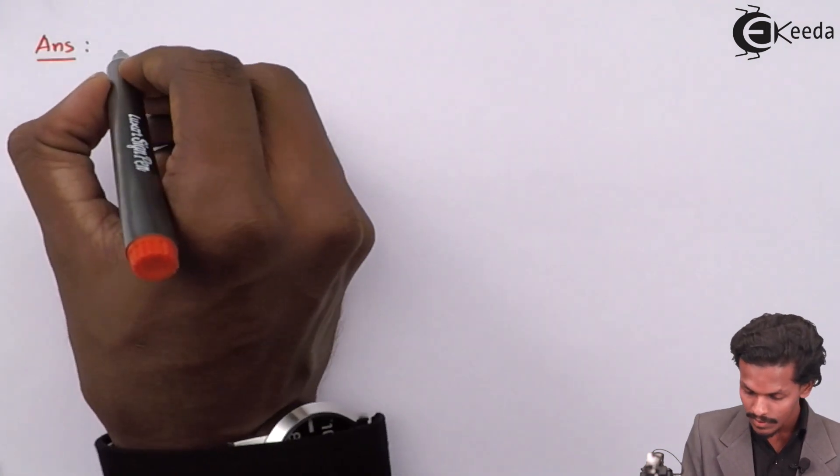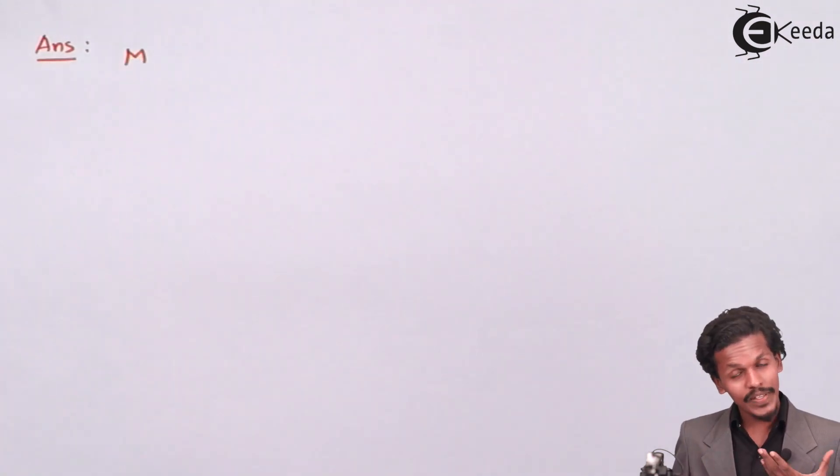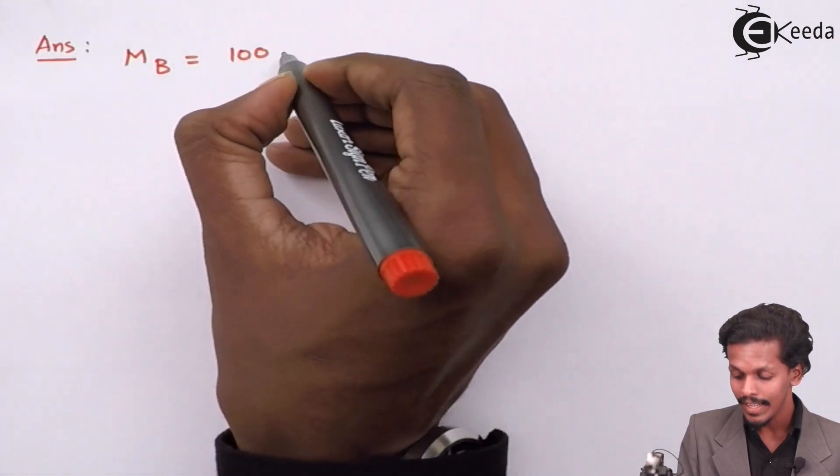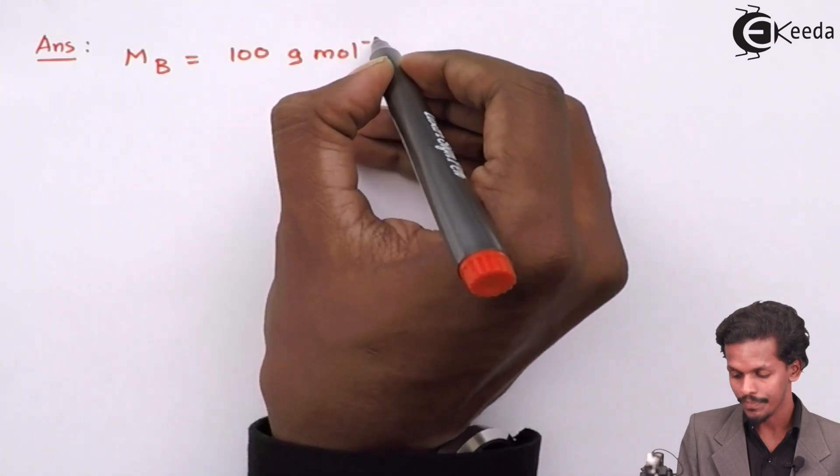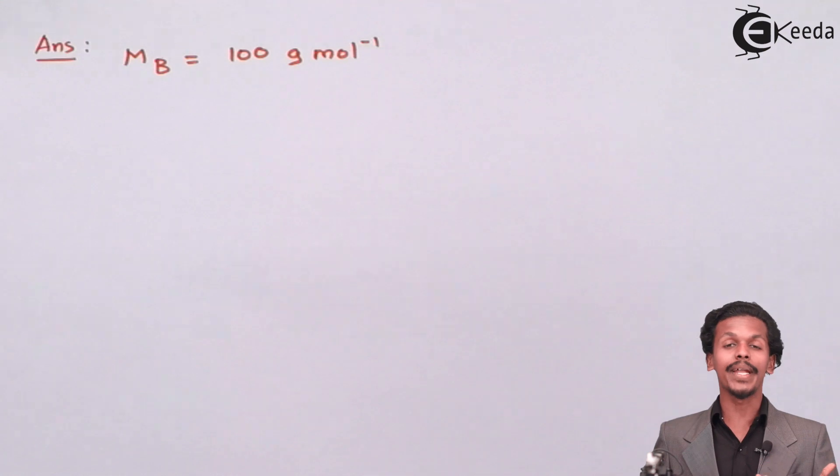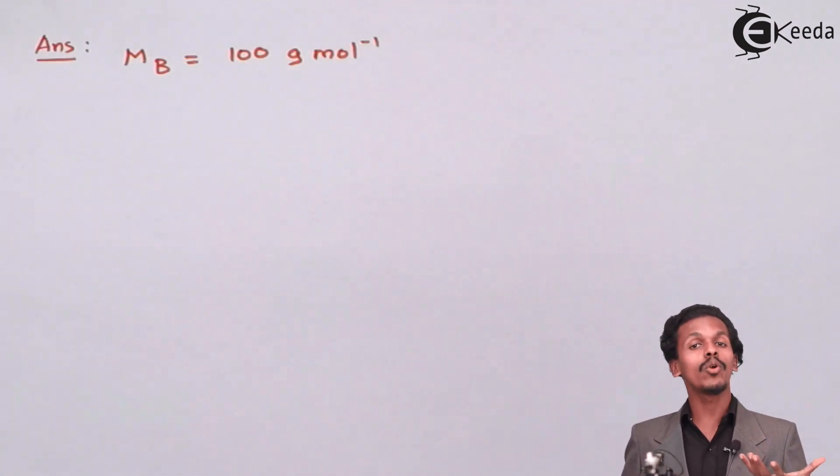From the data, the thing given to us is the molar mass of solute, that is Mb, which is 100 g/mol. For convenience, let us convert this gram into kilogram because the value of Kb is also in kilograms.